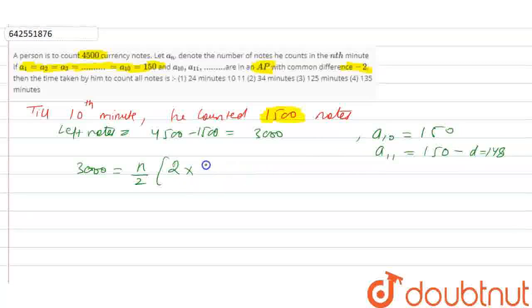A11 is 148 and plus N minus 1 into D was minus 2, so we can calculate this by N square minus 149N plus 3000 is equal to 0.